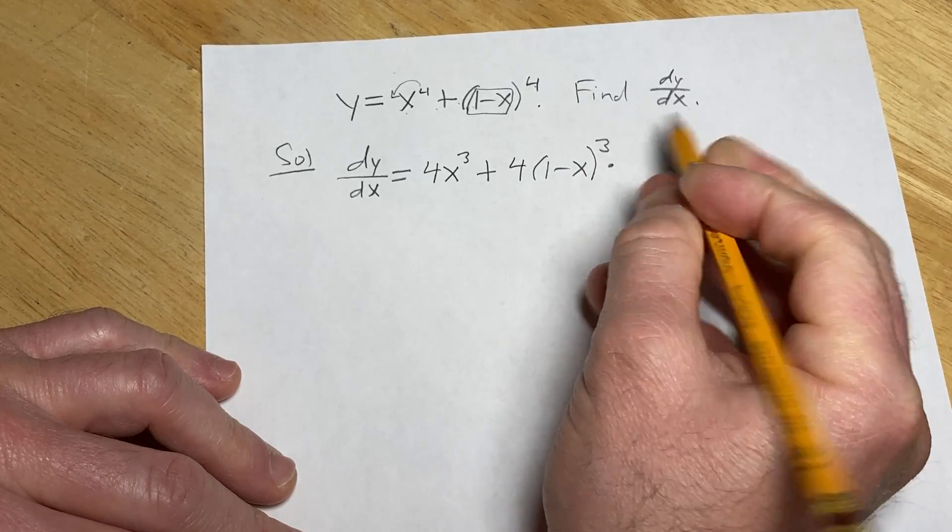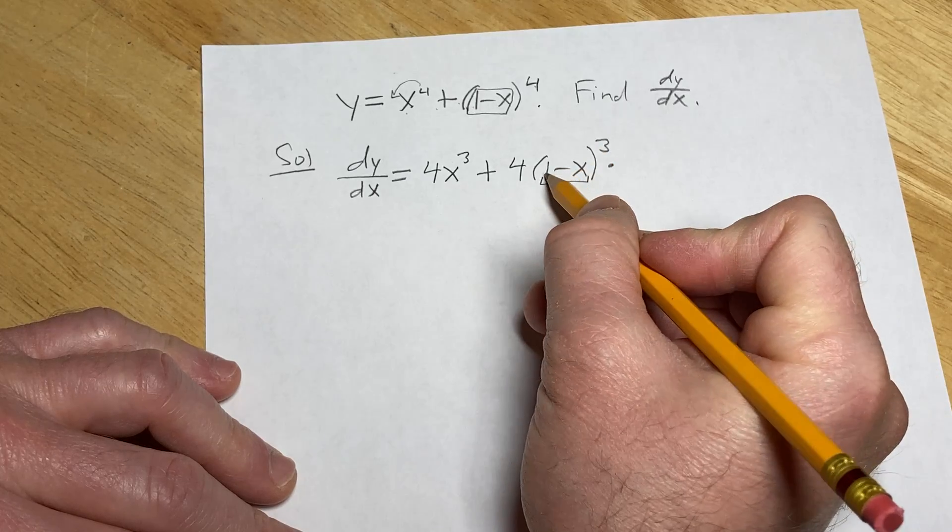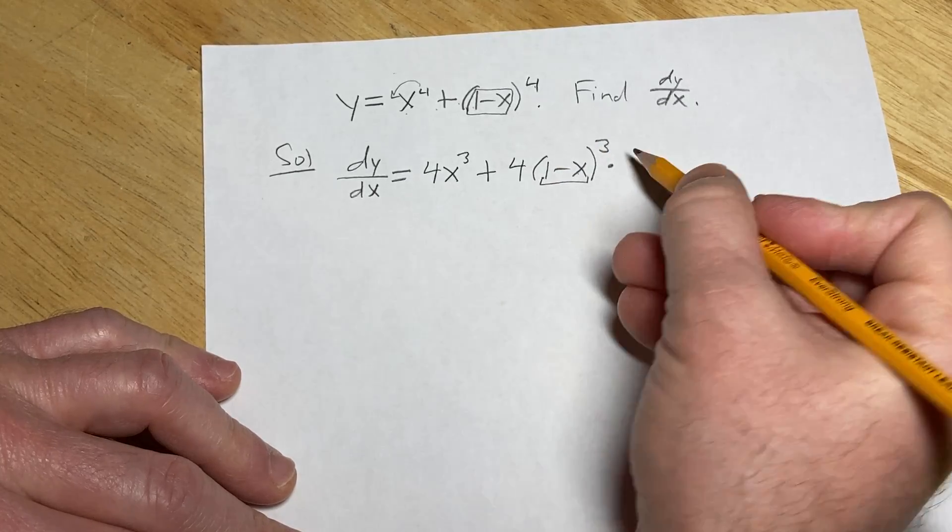and then you multiply by the derivative of your inside function. The derivative of 1 is 0, the derivative of negative x is negative 1.